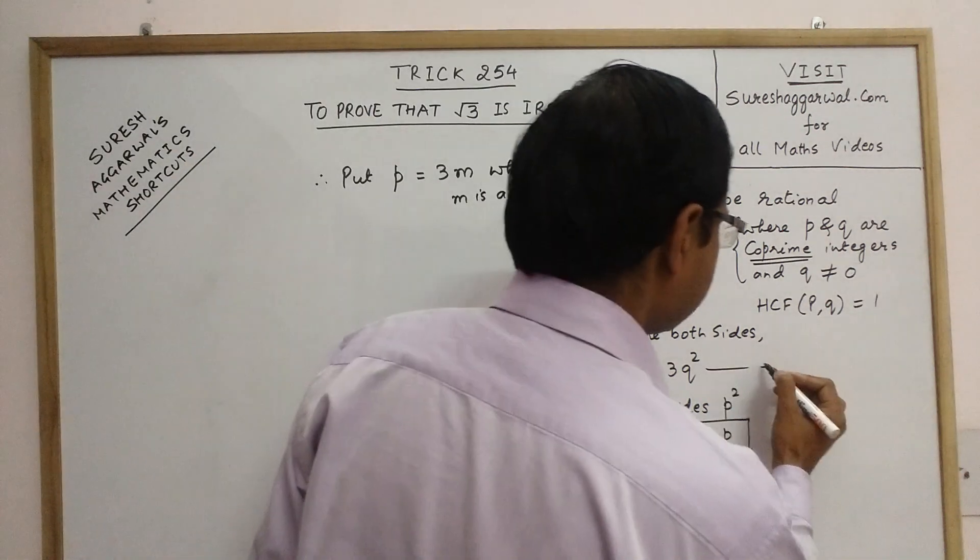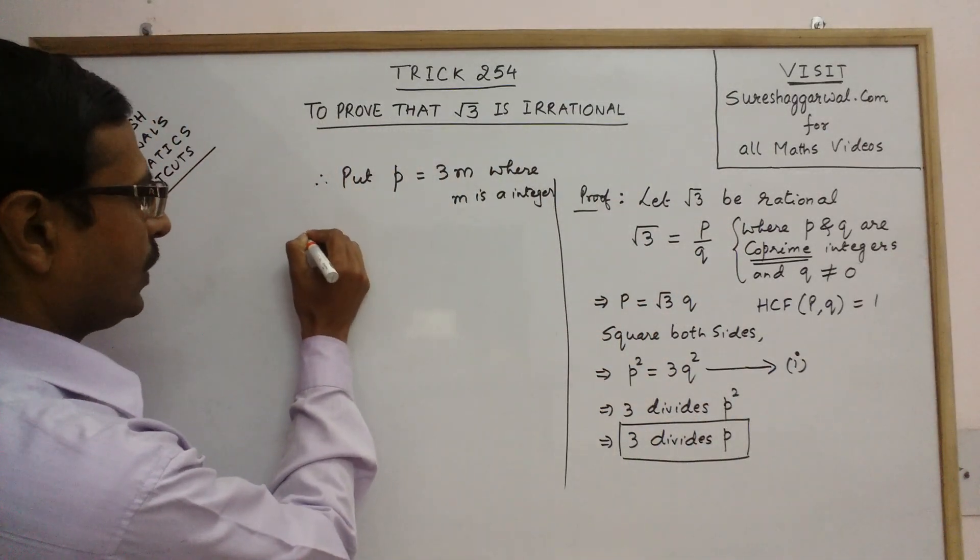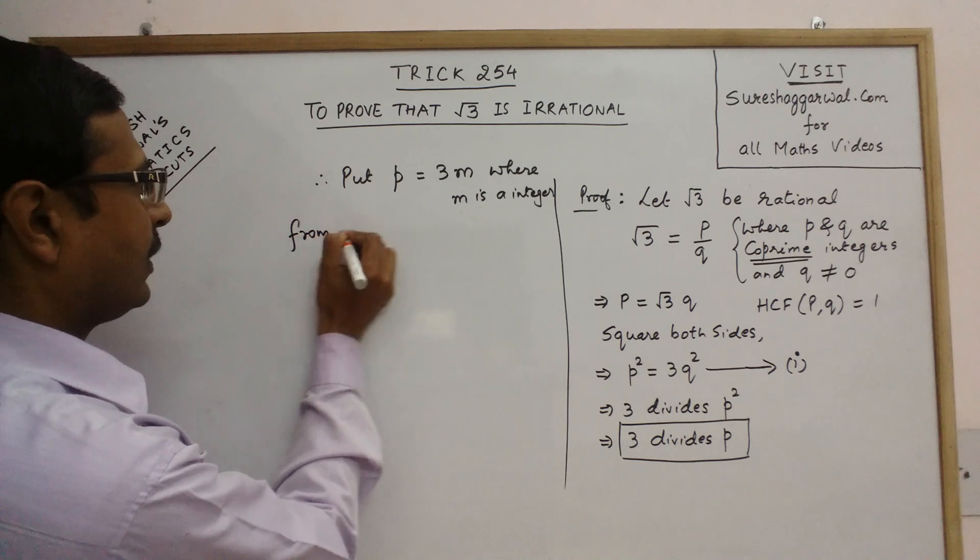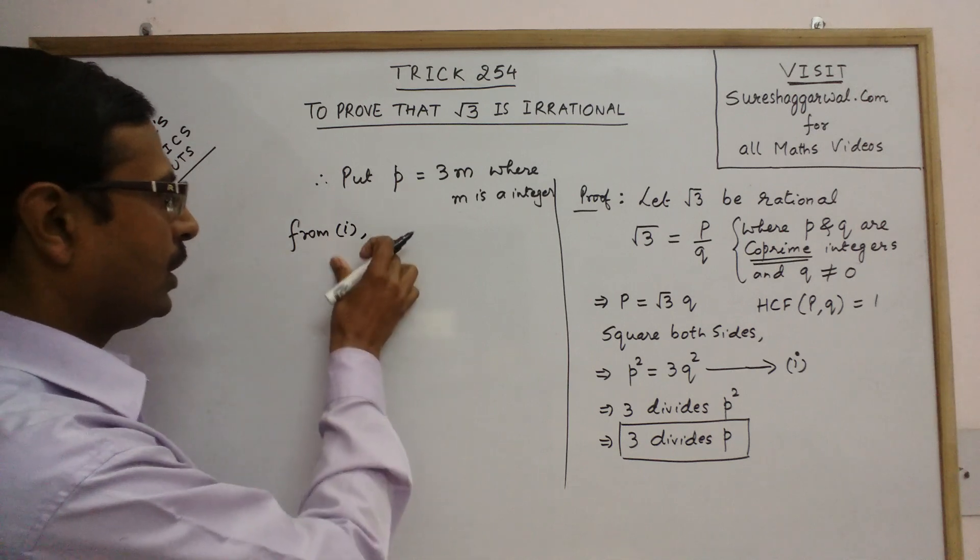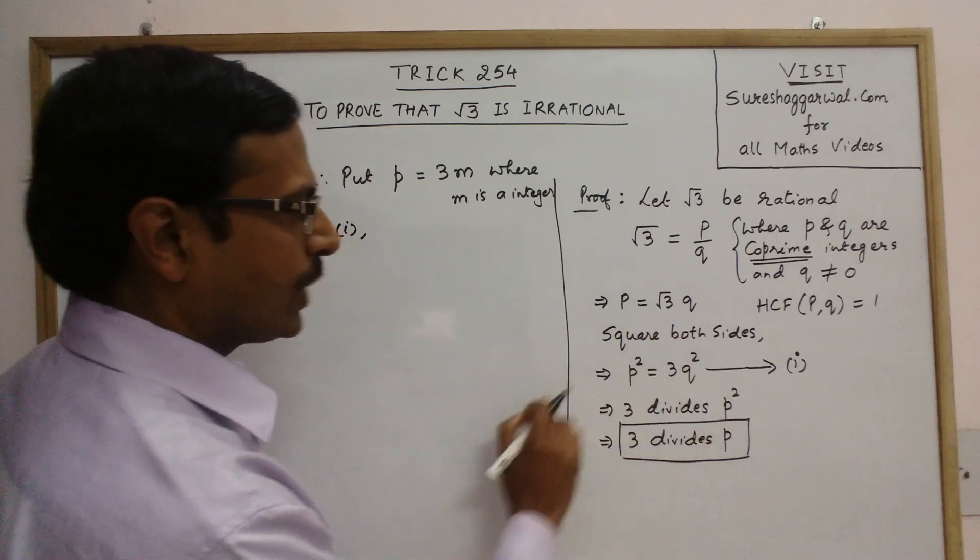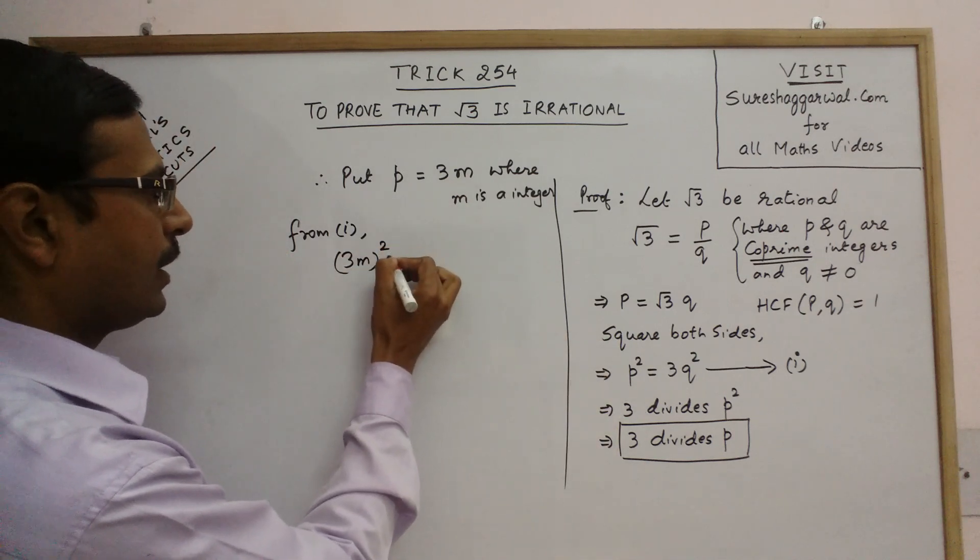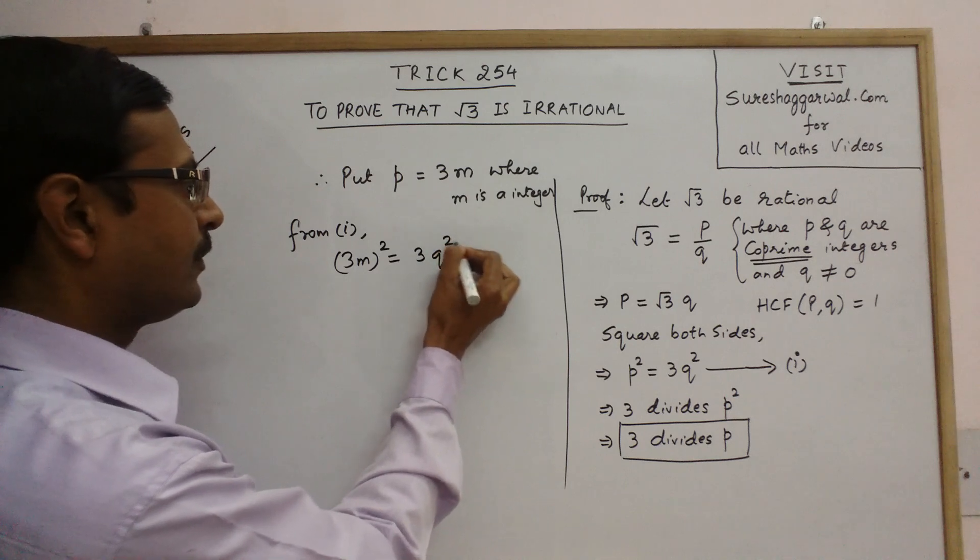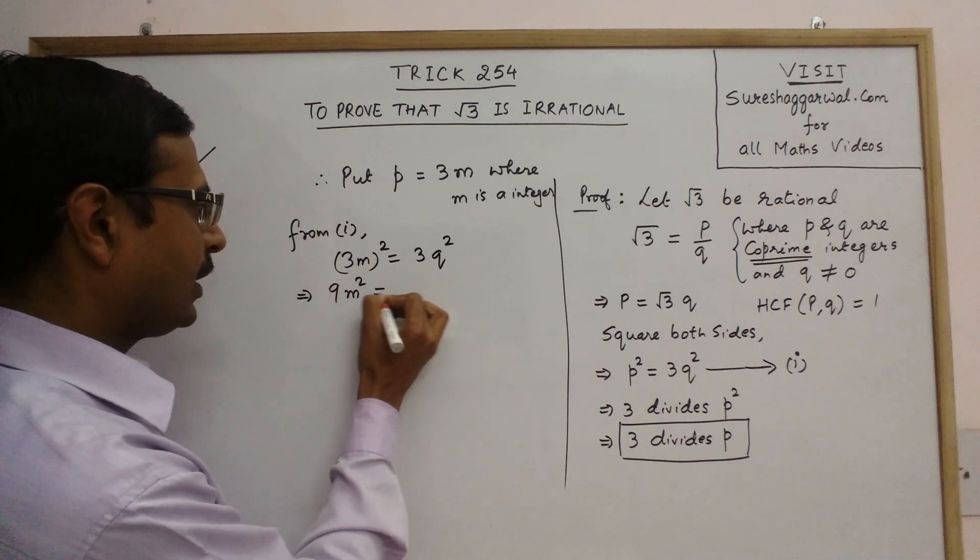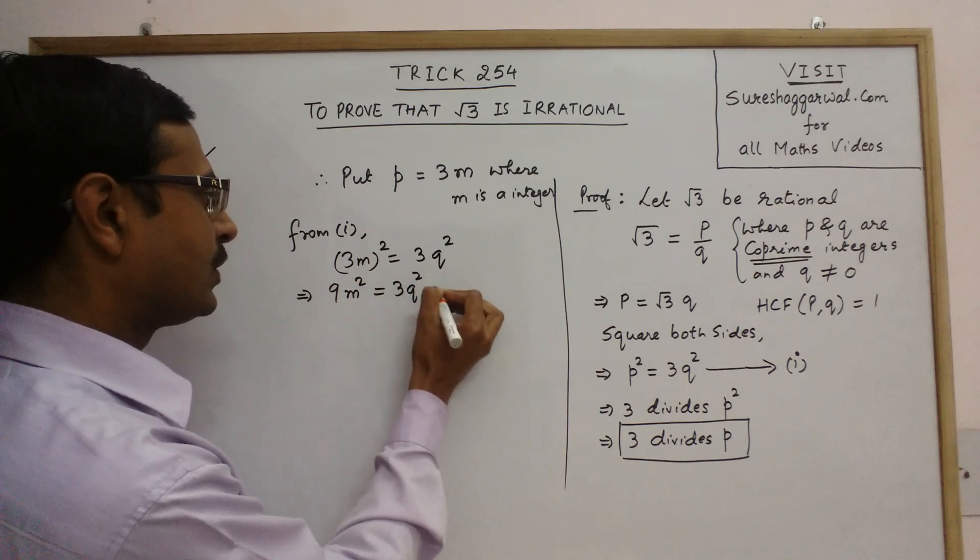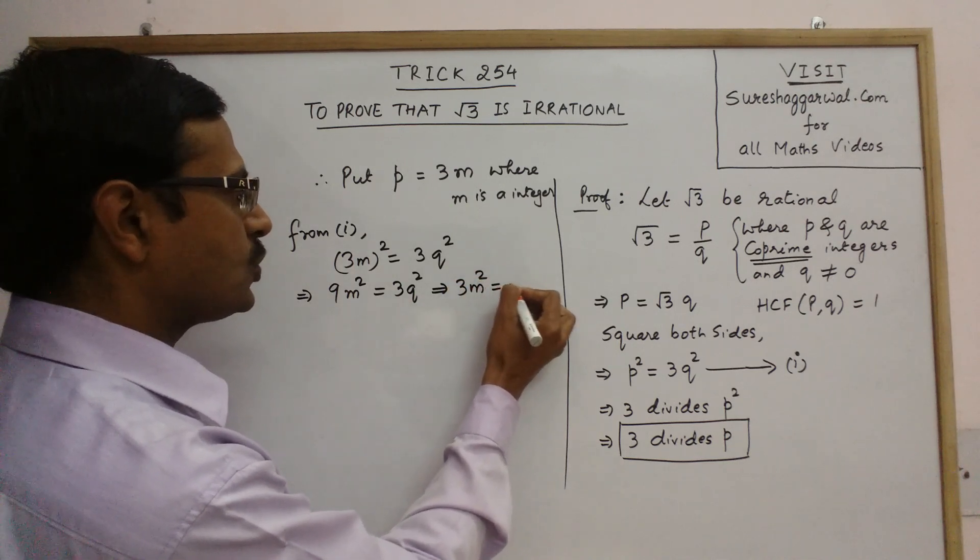Now p equal to 3m. Now I am making use of this equation, equation number 1, which I got by squaring this. So from 1, I have p square equal to 3 into q square. So I will put the value of p as 3m here. So 3m square equal to 3 into q square. So remove the square here, 9m square equal to 3 into q square. So we can cut a 3 common factor here. So 3m square equal to q square.